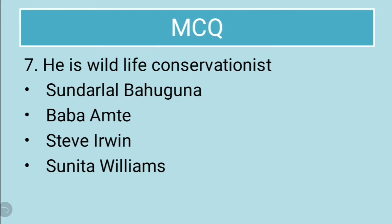The next question: he is a wildlife conservationist. The options are Sundarlal Bahuguna, Baba Amte, Steve Irwin, and Sunita Williams. Sundarlal Bahuguna is an environmentalist, Baba Amte is a social reformer, Steve Irwin was a wildlife conservationist, and Sunita Williams was an astronaut. The correct answer is Steve Irwin.